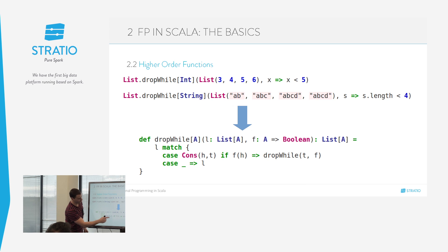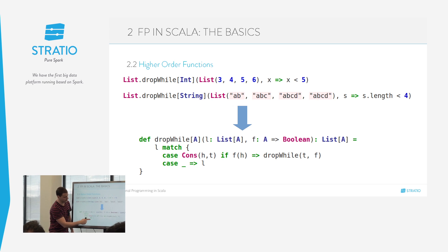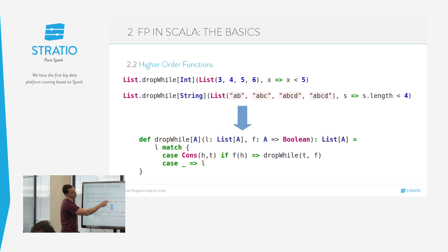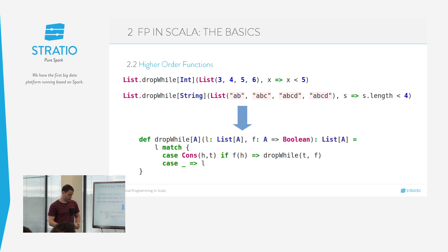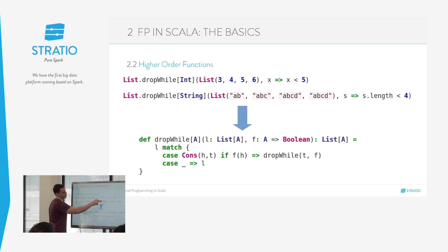Lo que hacemos es prácticamente lo mismo: comprobamos si se cumple la función para la cabeza; si sí, tiramos millas; si no, paramos y devolvemos el tail. Esto es muy útil porque si tenemos una lista de millones de registros y queremos parar en el tercero, no hay que recorrer toda la lista — recorremos solo los primeros y devolvemos el tail.